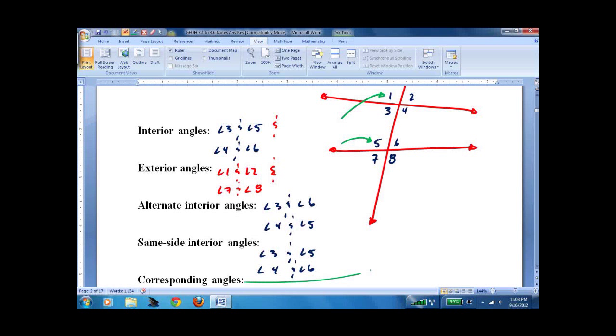So there's lots of them. Angle 1 and angle 5 are corresponding. Angle 2 and angle 6 are corresponding. Angle 3 and angle 7 are corresponding. Angle 4 and angle 8 are corresponding.